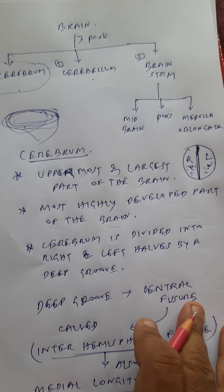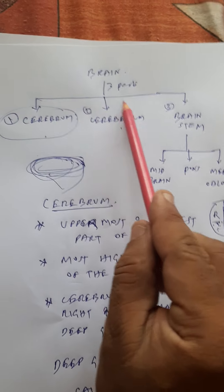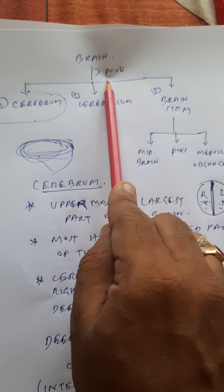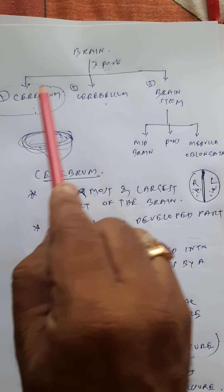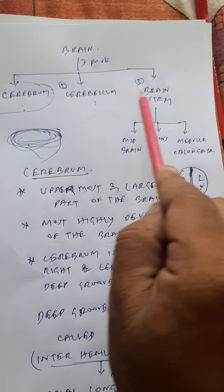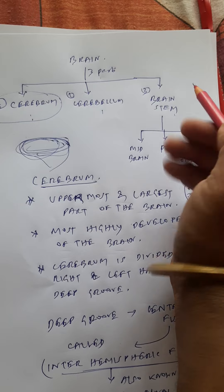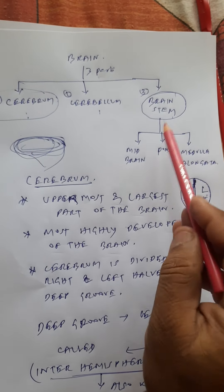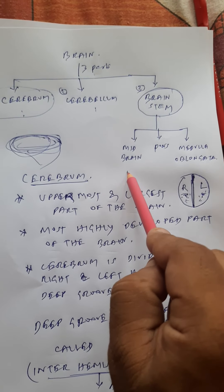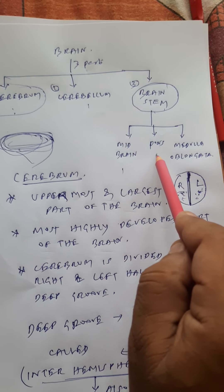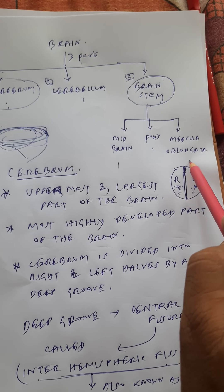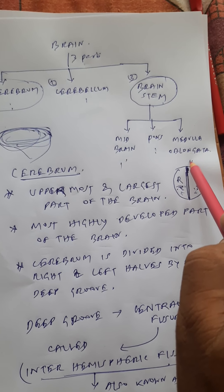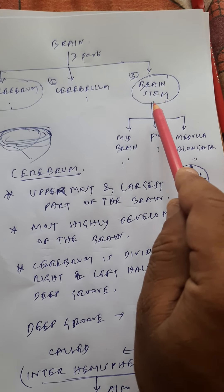To recap: the brain is broadly divided into three parts — cerebrum, cerebellum, and brainstem. The three parts of the brainstem are midbrain, pons, and medulla oblongata.